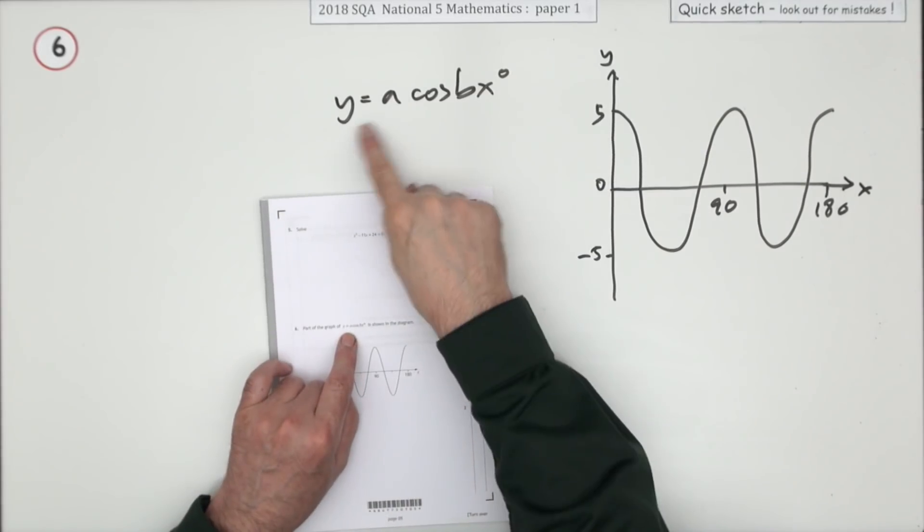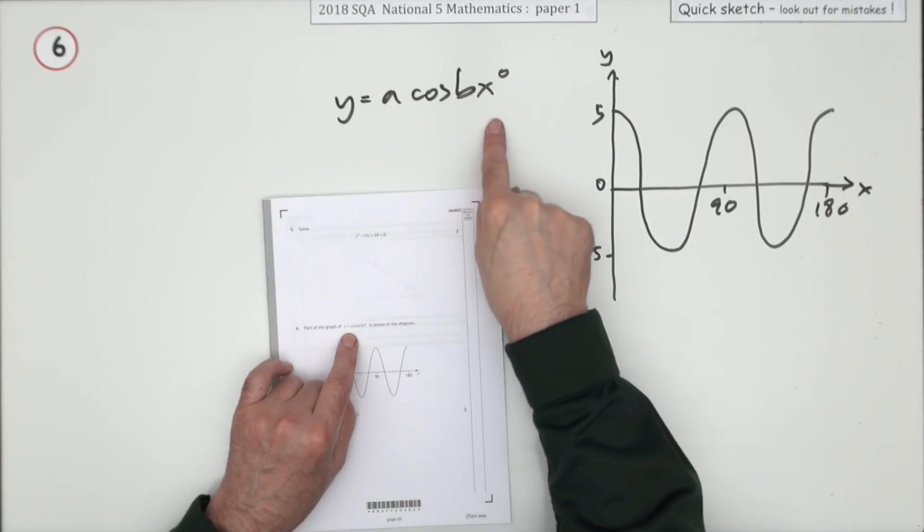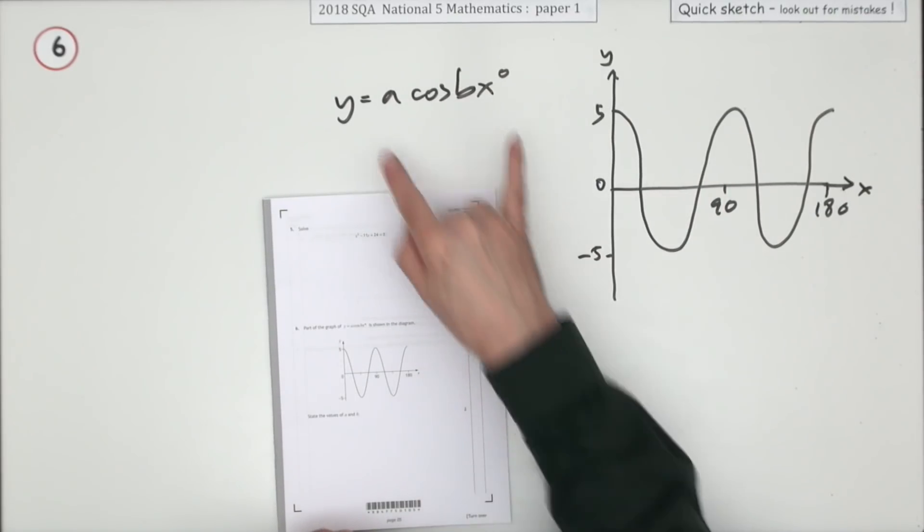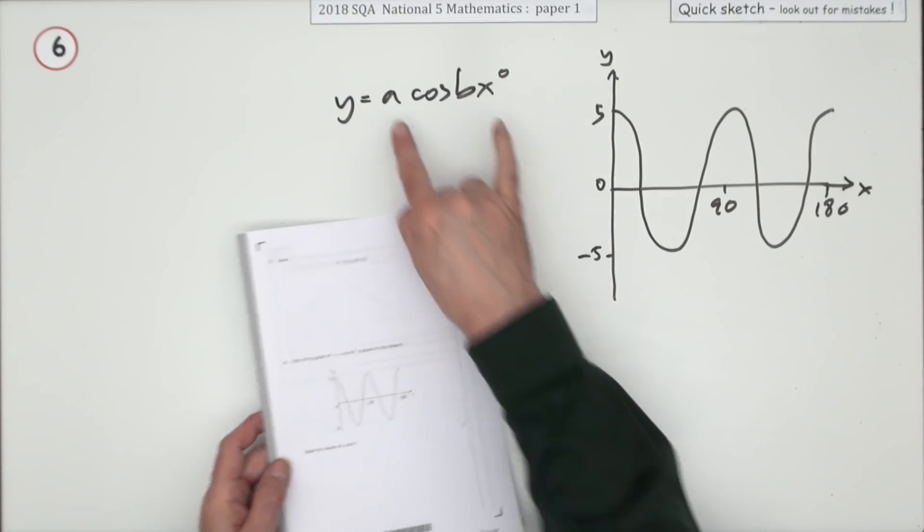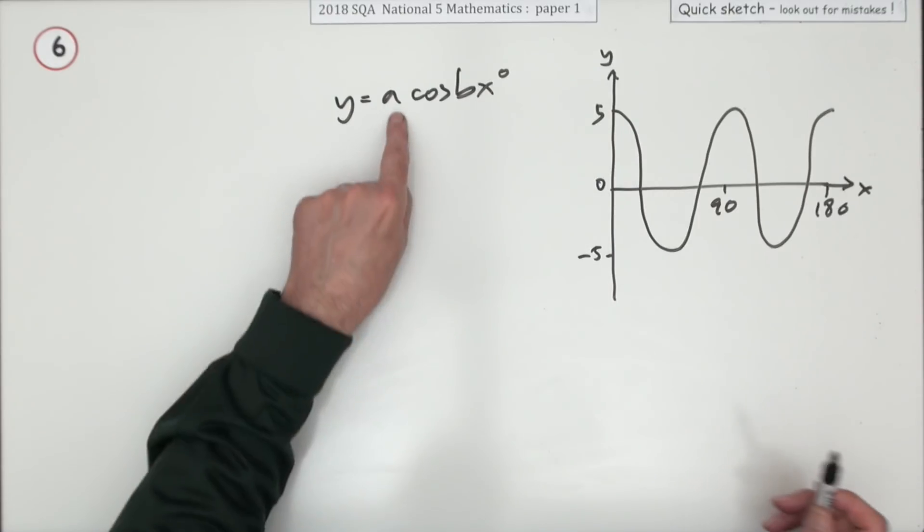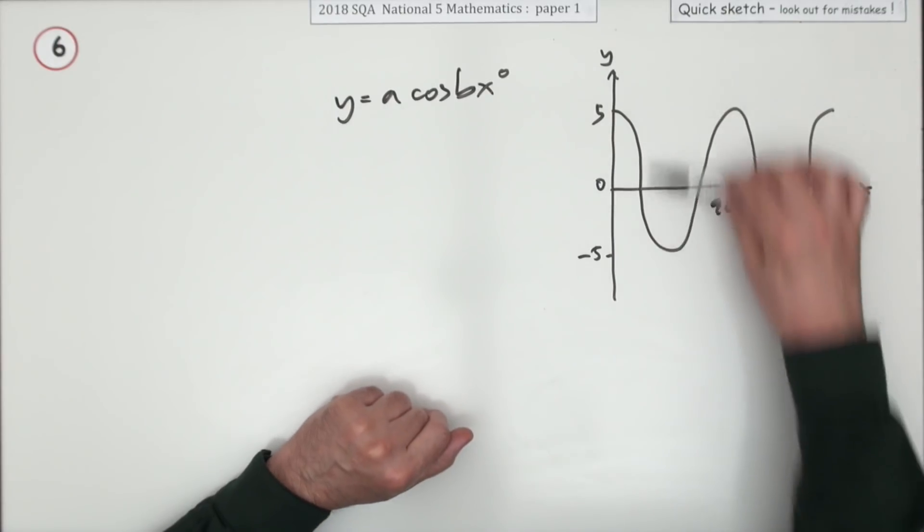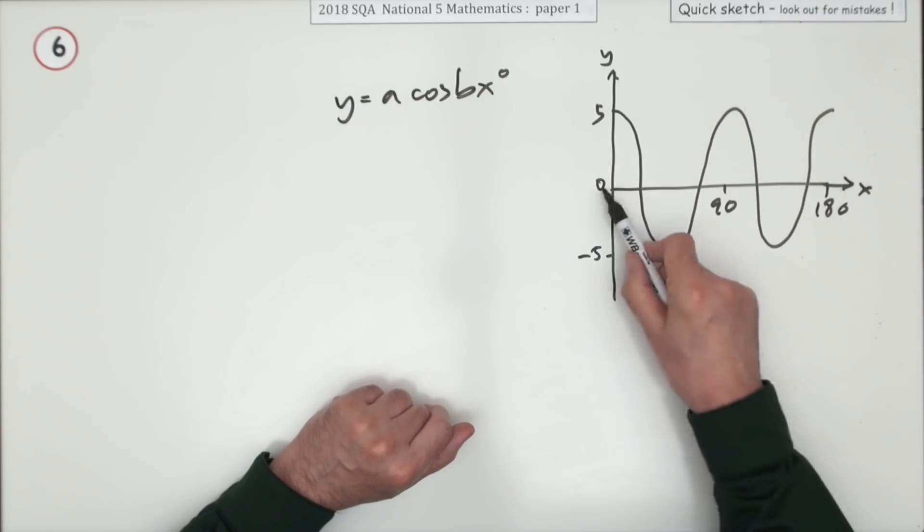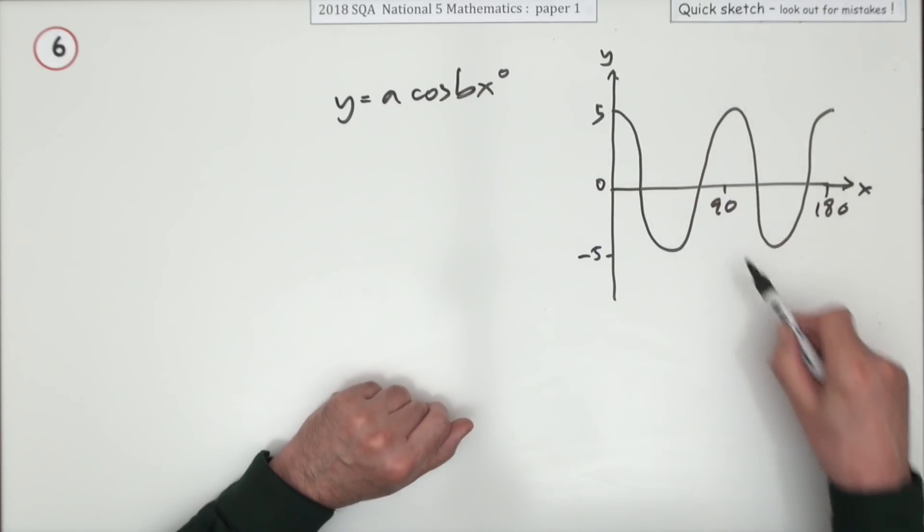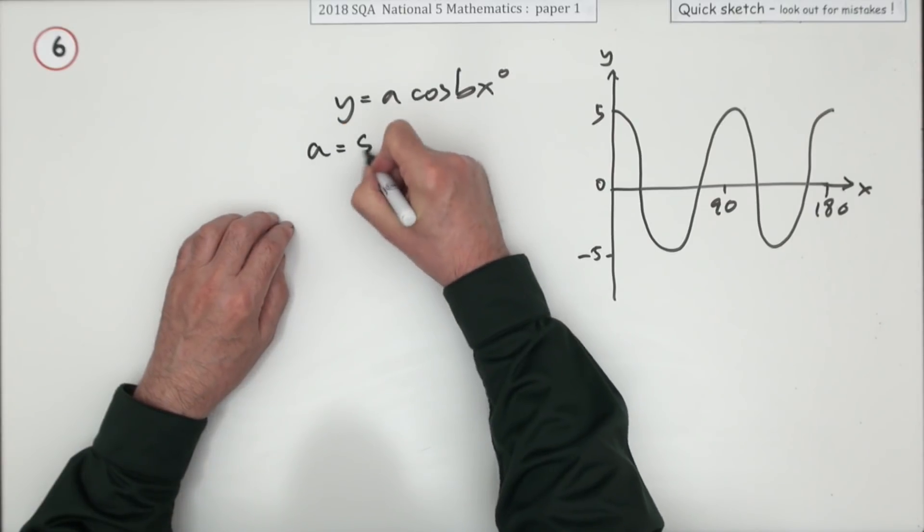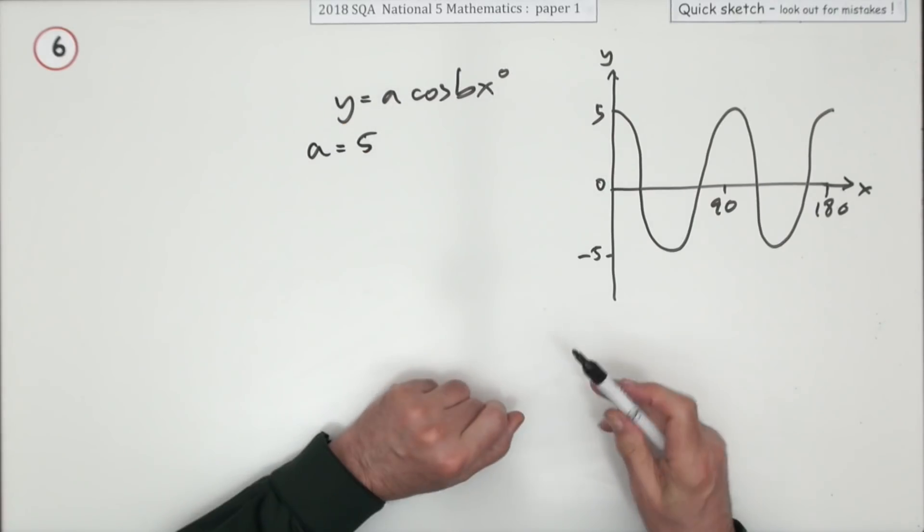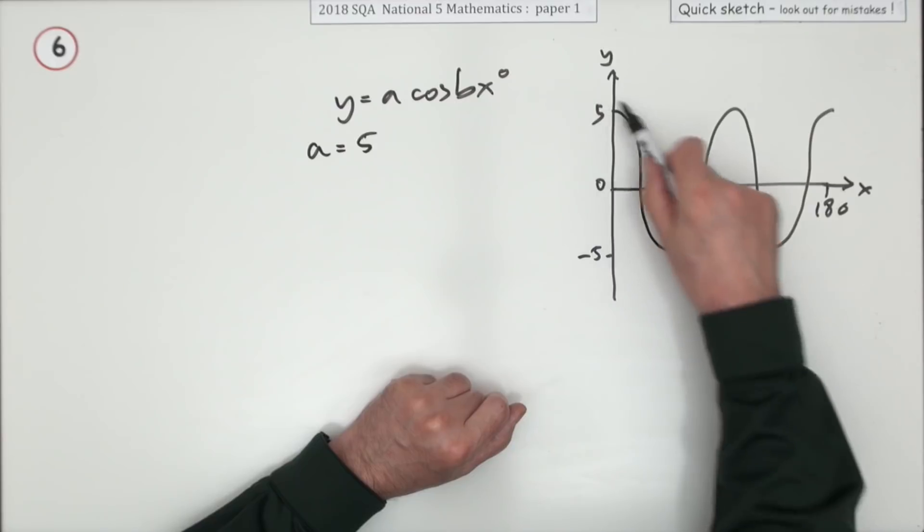Number six, part of the graph of y equals a cos(bx) is shown here. Just state, one mark each, state the values of a and b. a is the amplitude: how high does it get, how low does it get from the middle position? It goes up five, down five. a is five.